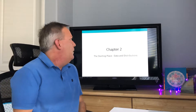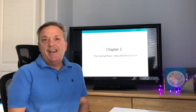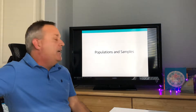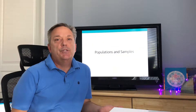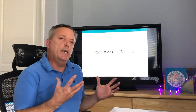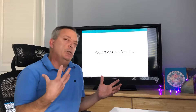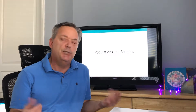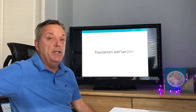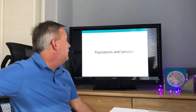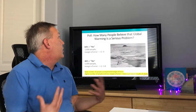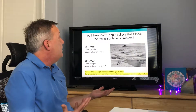This is Chapter 2: The Starting Place — Data and Distributions. The first part of the text reviews populations and samples and how we draw samples from the population in each experiment, because we'll never be able to survey the whole population for large groups like the human race.